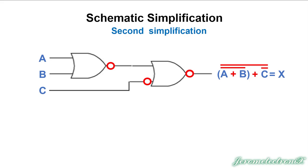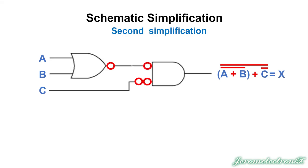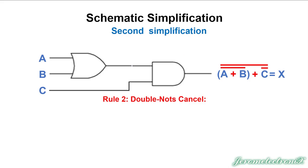Pushing the first bubble on the right through backwards — it changes the gate and puts an input bubble on both inputs. Now we have two bubbles side by side; they cancel each other. That other bubble can slide over to the next bubble and annihilate as well, so we don't really need to change the remaining gate on the left. Next, we cancel the double NOTs above A, B, and C, but there will still be a line above the right operator.